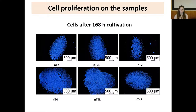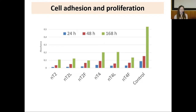On the femtosecond laser-treated surfaces, lower proliferation was observed. All samples showed lower initial adhesion compared with the plastic control. After 48 hours there were no significant differences between all samples, and after 168 hours nanostructured titanium grade 4 samples had the highest levels of cell proliferation. However, femtosecond laser-treated implants had greater wettability but lower proliferation compared with the same base material.